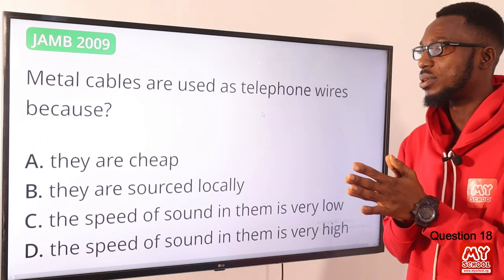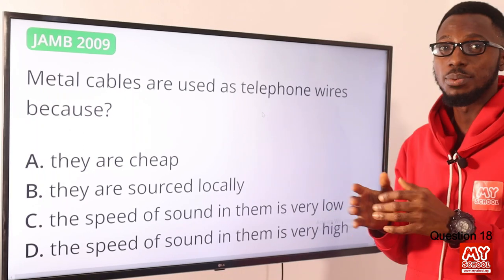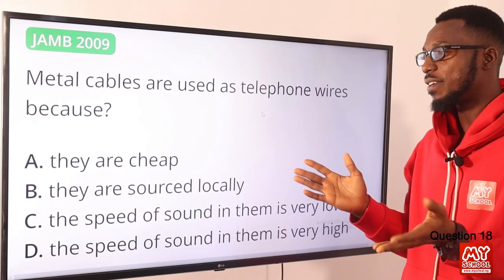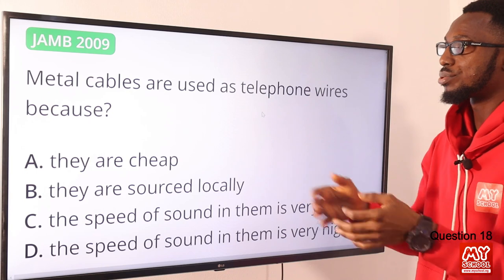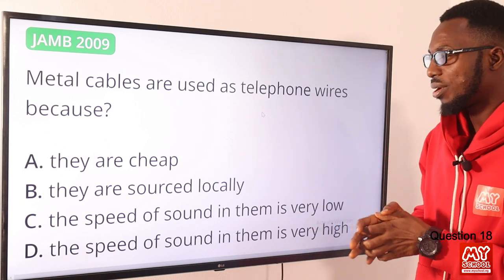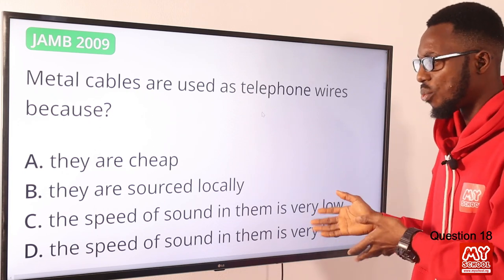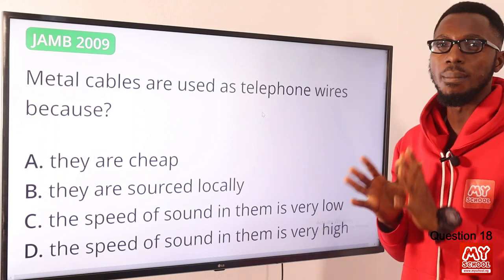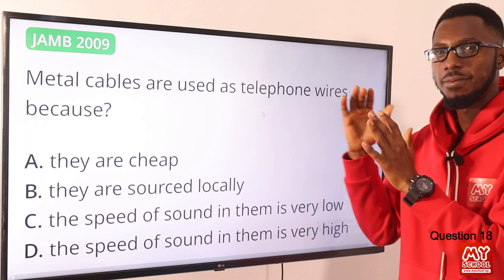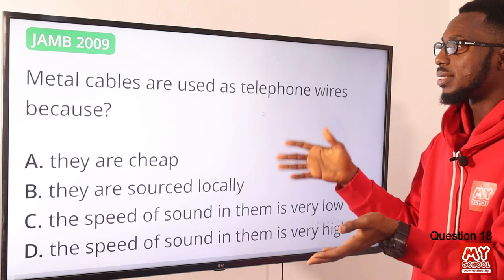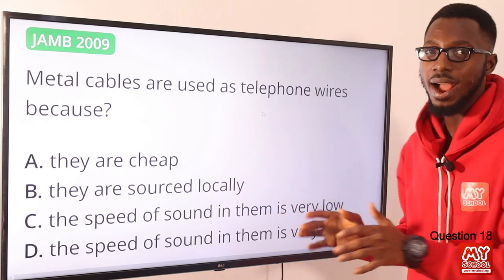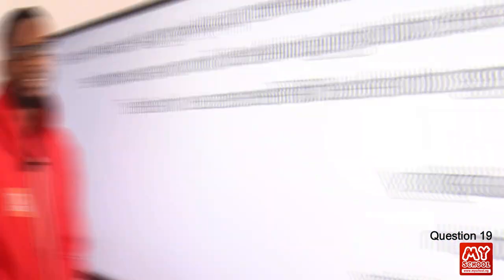Metal cables are used as telephone wires because why? Looking through the options: they are cheap — copper is used for telephone wire cables and copper is quite expensive, so I can discard that. Option B: they are sourced locally. Option C: the speed of sound in them is very low. Option D: the speed of sound in them is very high. Comparing the speed of sound in metals to air, it is far higher. So metal cables are used as telephone wires because the speed of sound in them is very high. Option D is the right option.